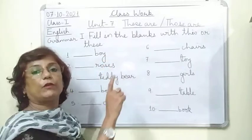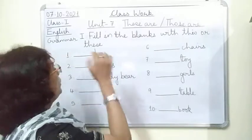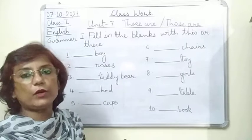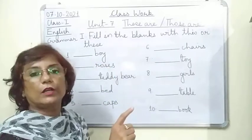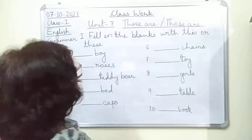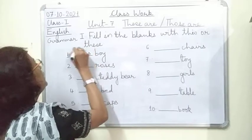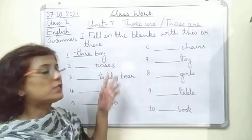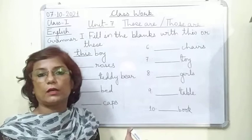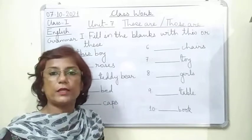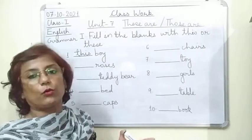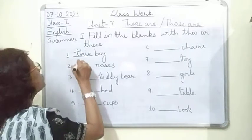Just look at the naming word. 'Boy' — boy is singular, so the answer is 'This boy'. 'Roses' — the form of roses is plural, so the answer is 'These roses'. With plural form, we use 'these'.